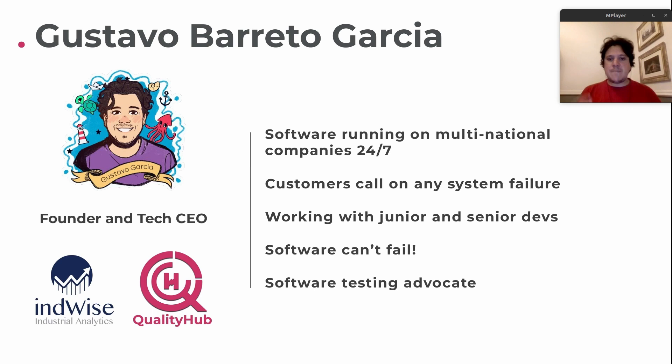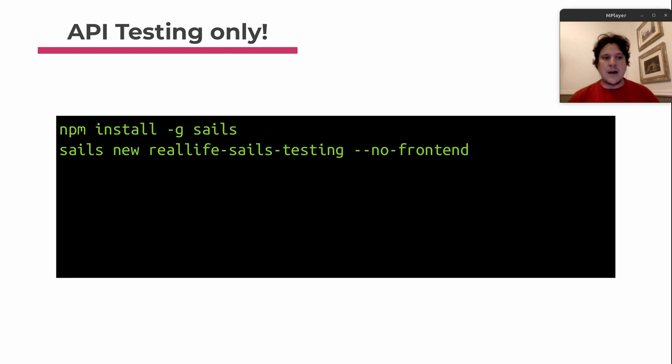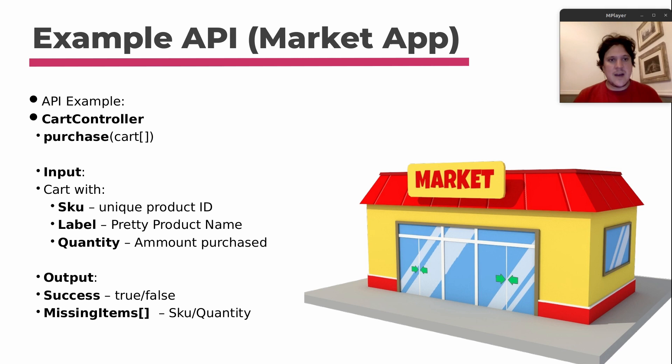To guarantee that everything is running and good, I started advocating for software testing as a best practice. I've created a new repo that's online on GitHub, so go there, add stars, fork and expand. We're only testing APIs right now, starting a new Sails repo with no front-end option. Instead of going through generic examples, let's do a real-life example.